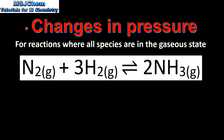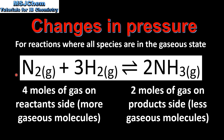Next we'll look at changes in pressure — this applies to reactions where all the species are in the gaseous state. Here we have the equation for the Haber process, in which nitrogen reacts with hydrogen to form ammonia in the forward reaction, and in the reverse reaction ammonia decomposes to form hydrogen and nitrogen. We have 4 moles of gas on the reactant side and 2 moles of gas on the product side.